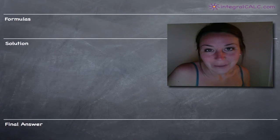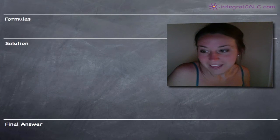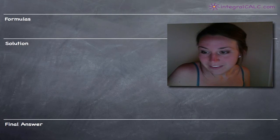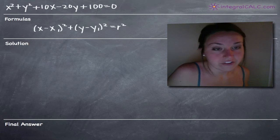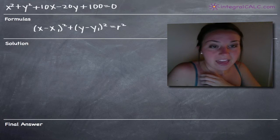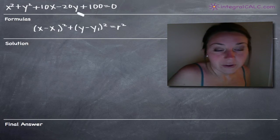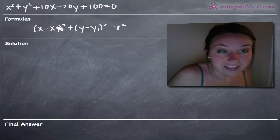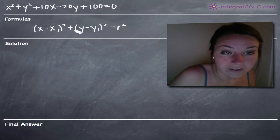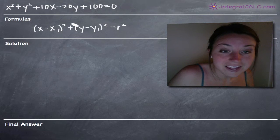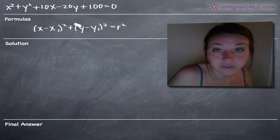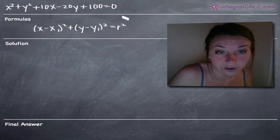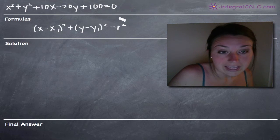Hi everyone! Welcome back to IntegralCalc.com. Today we're going to be sketching a circle, and the equation of the circle that we're going to be sketching is x squared plus y squared plus 10x minus 20y plus 100 equals 0.